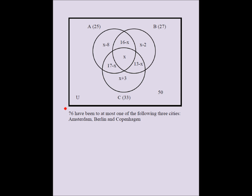There is a very important statement in the question we haven't used yet: 76 have been to at most one of the three cities. 'At most one' means one or fewer — in this context, one or zero. So these people have been to exactly one country, and those 50 have been to none. The four terms — the three exclusive regions plus 50 — should add up to 76.